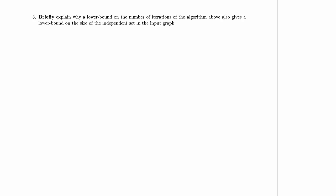We're supposed to briefly explain why a lower bound on the number of iterations of the algorithm above, so of the algorithms in the loop, also gives a lower bound on the size of the independent set in the input graph.